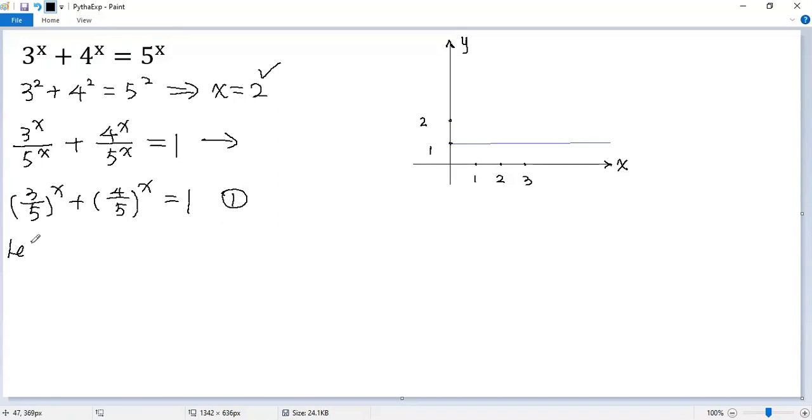And let f(x) denote the left side: (3/5)^x + (4/5)^x. And g(x) denote the right side.